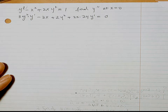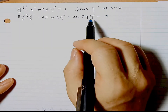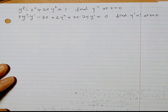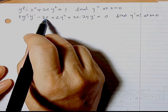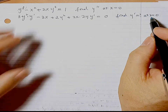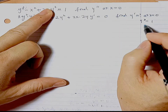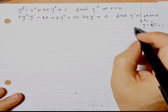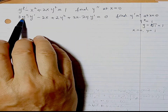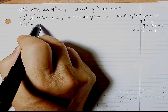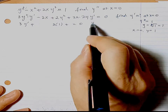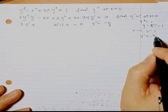Before taking the second derivative, we need y' at x = 0. First find y when x = 0: substituting into the original gives y³ = 1, so y = 1. Now substituting x = 0, y = 1 into the first derivative equation: 3(1)·y' - 0 + 2(1) + 0 = 0, so 3y' + 2 = 0, giving y' = -2/3 at x = 0.